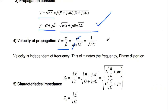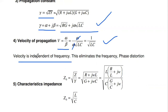The velocity of propagation is 1/√(LC). This velocity formula shows the velocity of propagation does not depend on frequency for a distortion-less line. This eliminates both frequency and phase distortion.